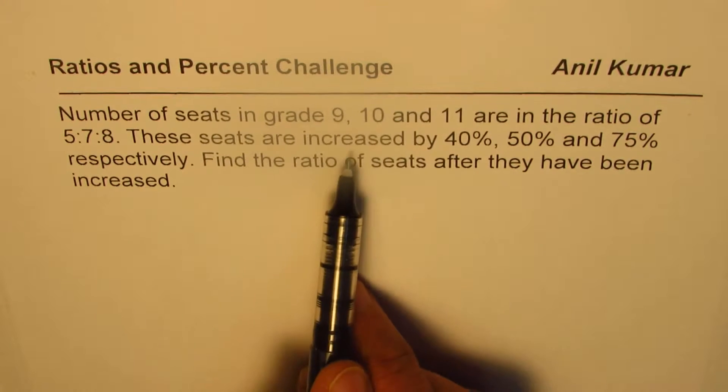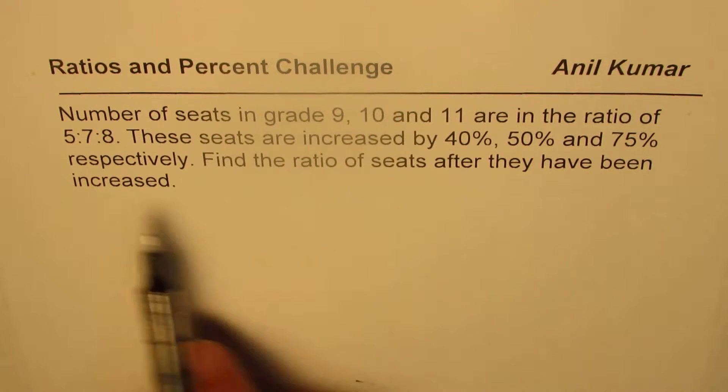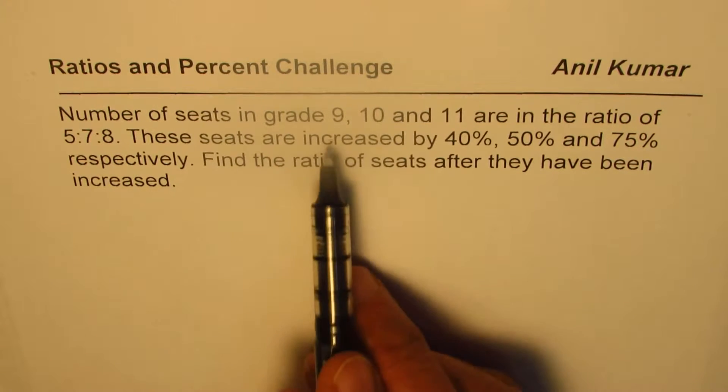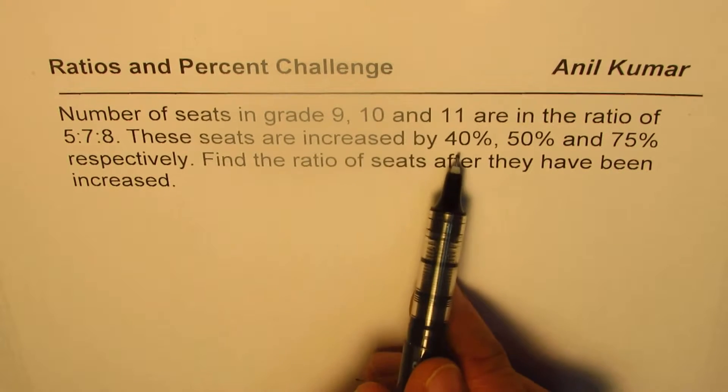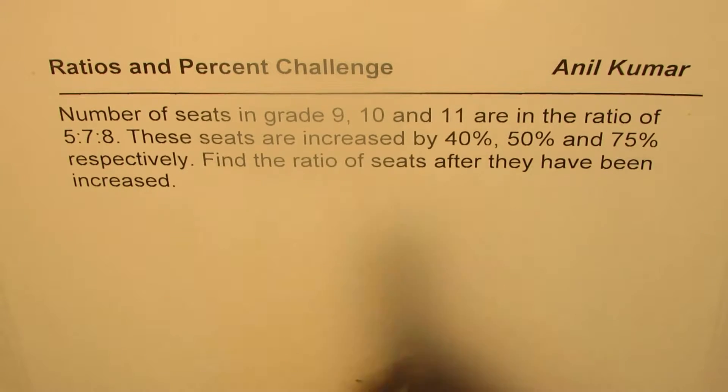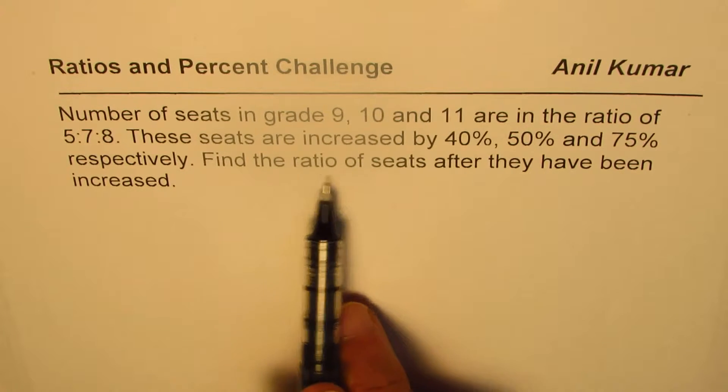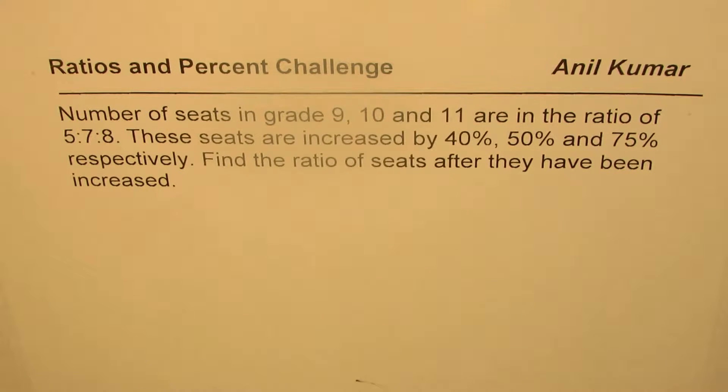10 and 11 are in the ratio of 5 is to 7 is to 8. These seats are increased by 40%, 50% and 75% respectively. That means grade 9 seats are increased by 40%, grade 10 by 50% and grade 11 by 75% respectively. Find the ratio of seats after they have been increased.